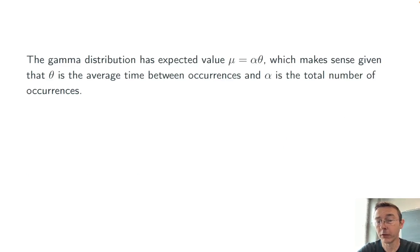The gamma distribution has expected value mu equals alpha times theta. And that makes sense, since theta is the average time between occurrences, and alpha is the total number of occurrences. So the expected waiting time for alpha occurrences is just that number alpha times the waiting time per occurrence. Makes sense. The variance formula is a little bit less memorable. It's alpha times theta squared.